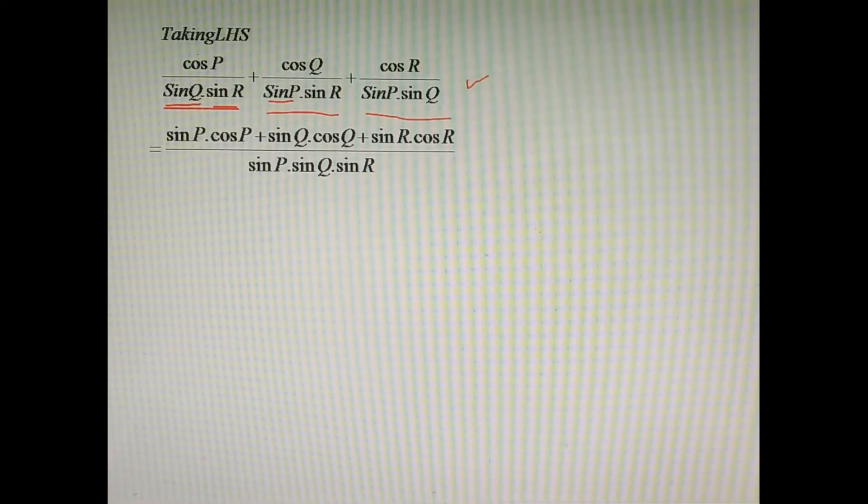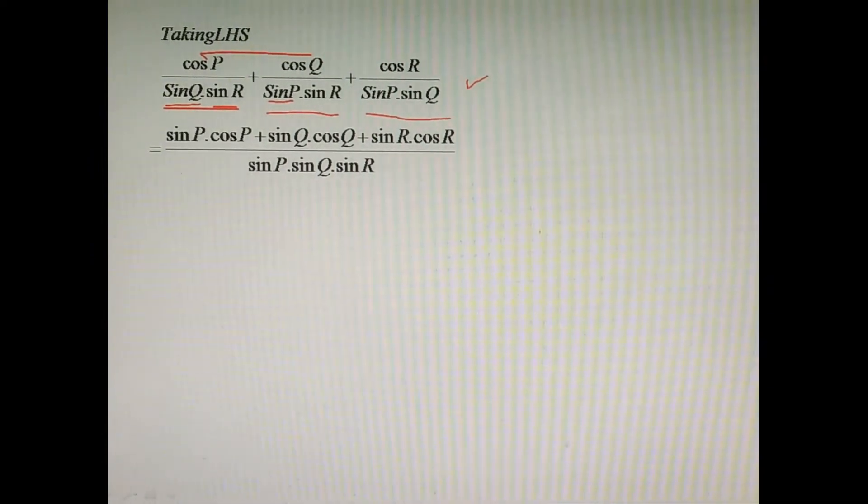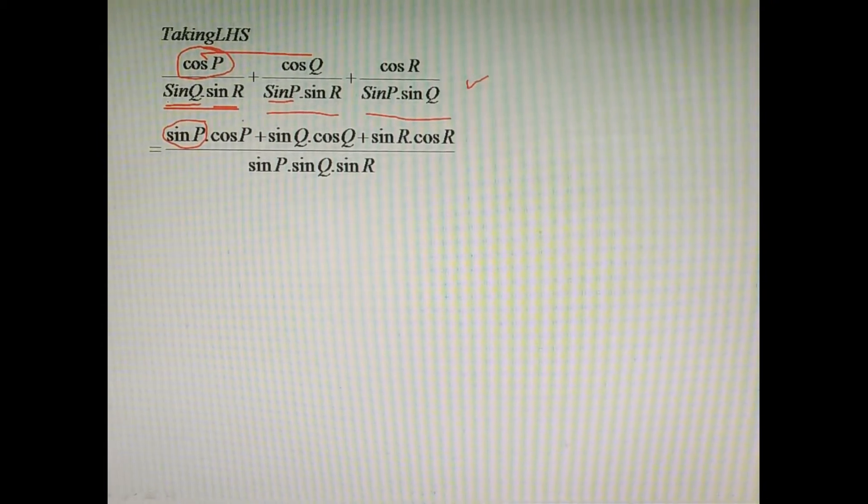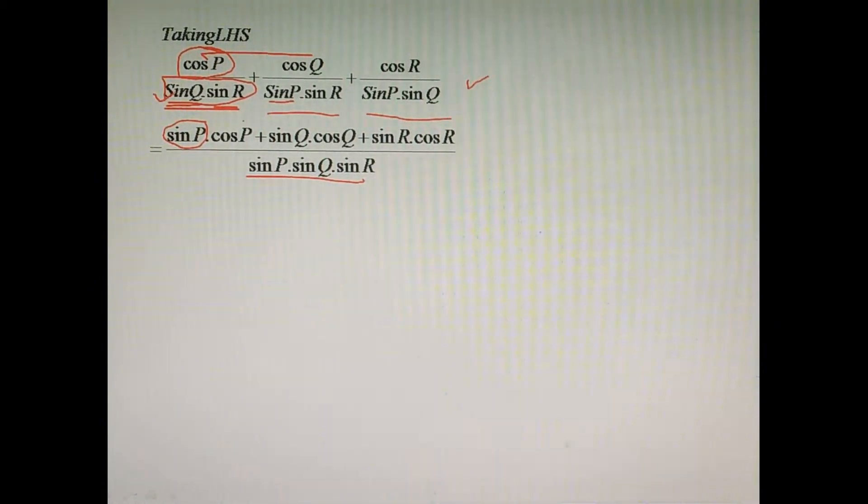And then, taking the LCM, we need to multiply in the numerator by some factors, by some trigonometric terms. So here we have to multiply the first trigonometric term cos P by sine P. So why is it so? Because when we compare this denominator with the LCM, then we already have sine Q and sine R, so there remains sine P. This one should be multiplied with the numerator of the first factor.